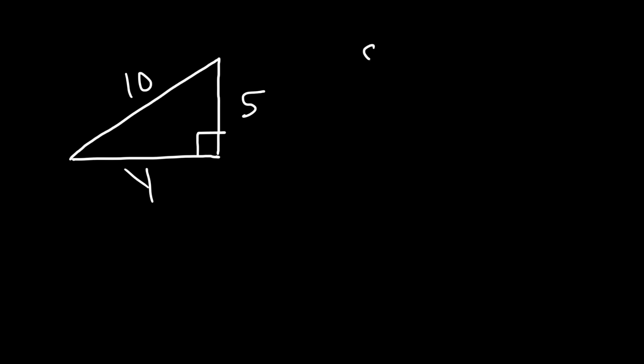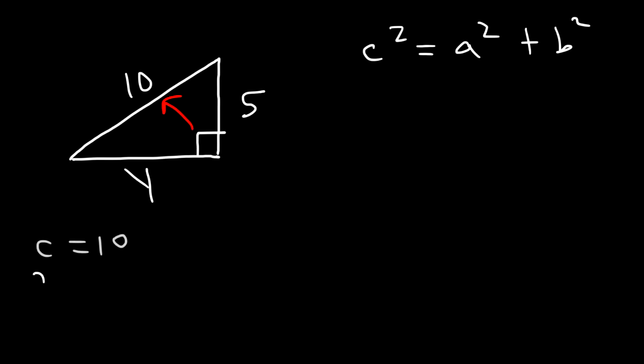Now let's work on another example. Let's say the hypotenuse is 10, this side is 5, and our goal is to calculate y. Go ahead and do this. So let's use the same formula: c squared is equal to a squared plus b squared. c is the hypotenuse, so in this problem c is 10. We could say a is y and then b is 5.